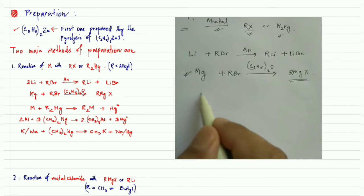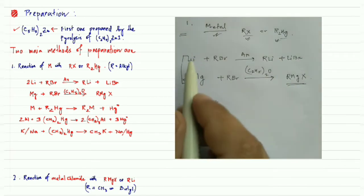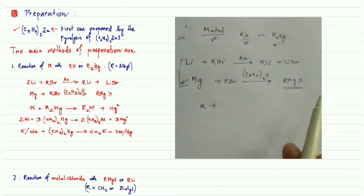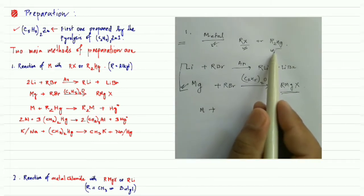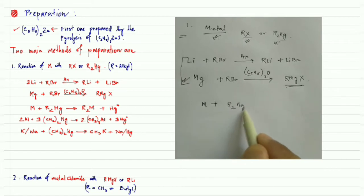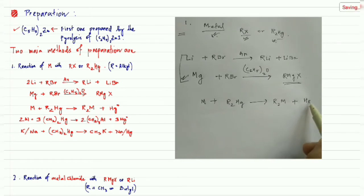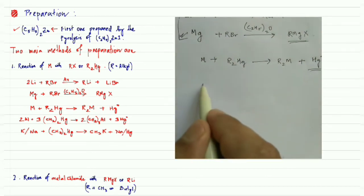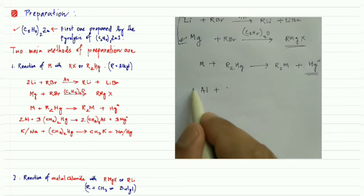These two reactions — lithium with alkyl halide and magnesium with alkyl halide — are examples of the reaction between a metal and an alkyl halide. Now, for the second sub-type, a metal can react with dialkyl mercury to give the organometallic compound, where mercury is in oxidation state zero. A well-known example is aluminum.